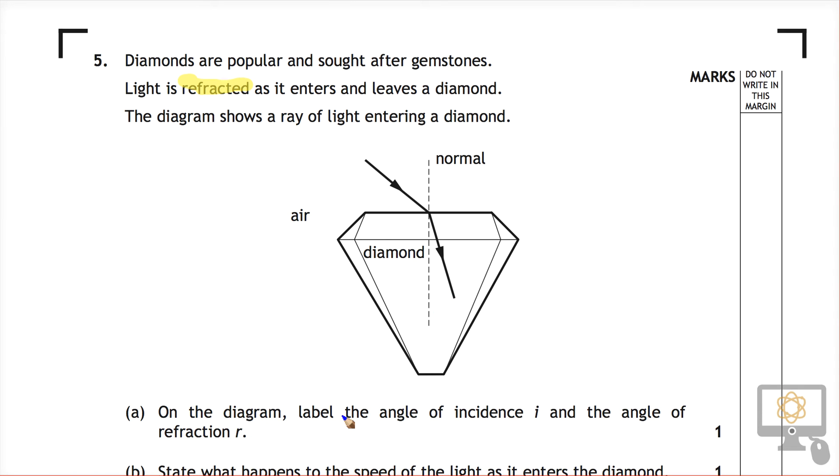On the diagram, label the angle of incidence I and the angle of refraction R. The most tempting thing to do is to put in the angle between the ray and the material, whereas in actual fact, the angles are always measured between the incident ray and the normal. So that in there is I, and this in here is R, the refracted angle.